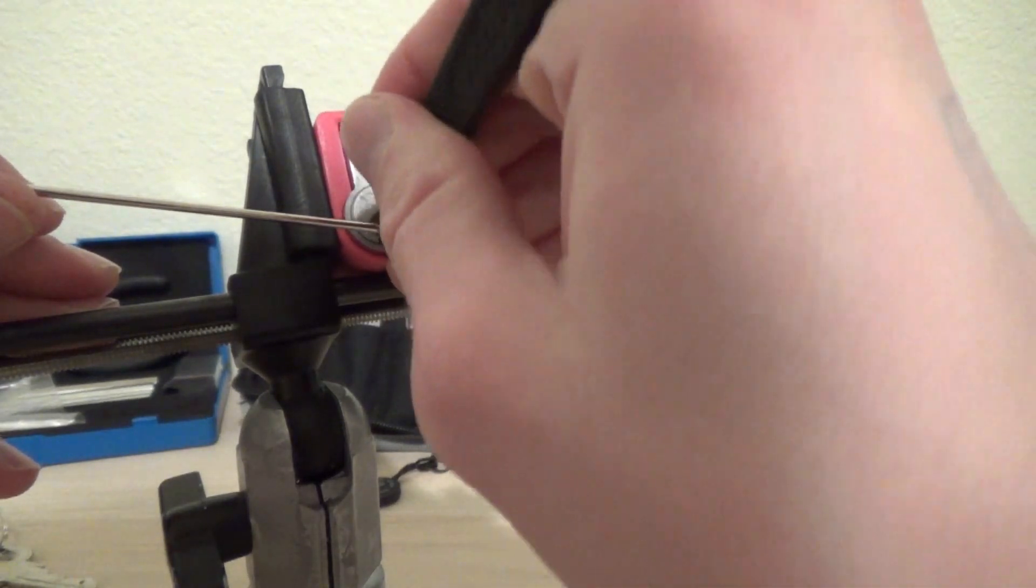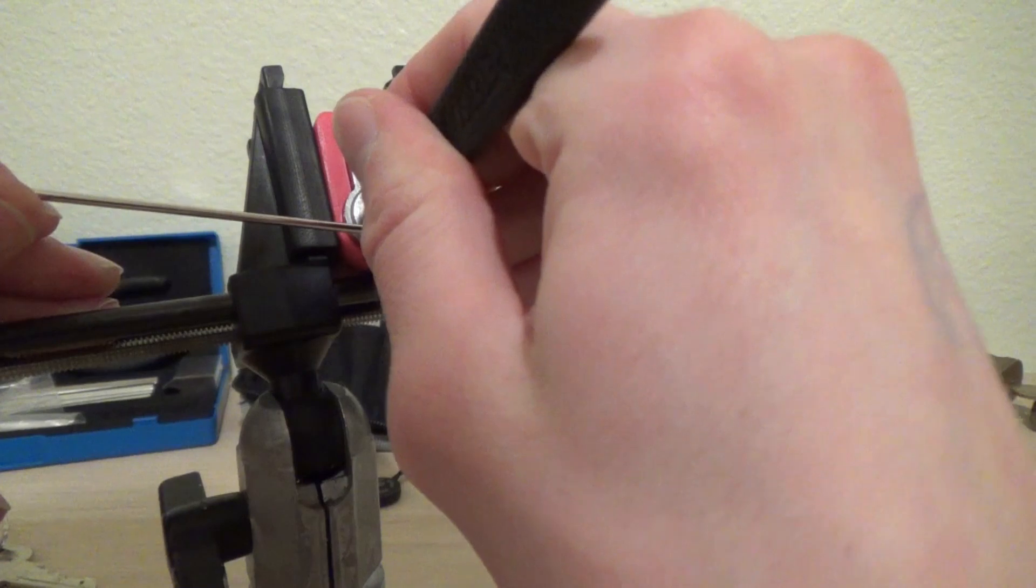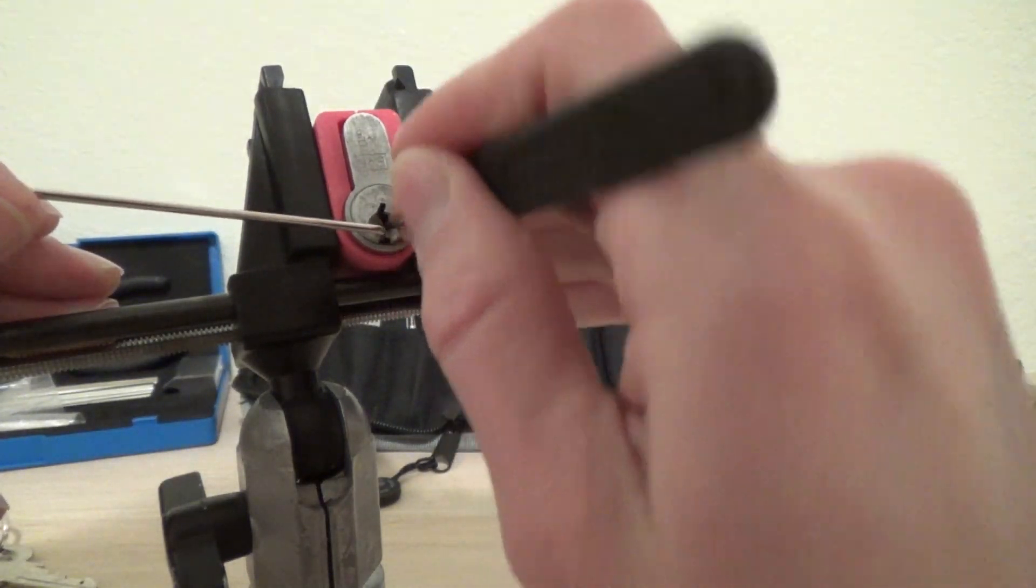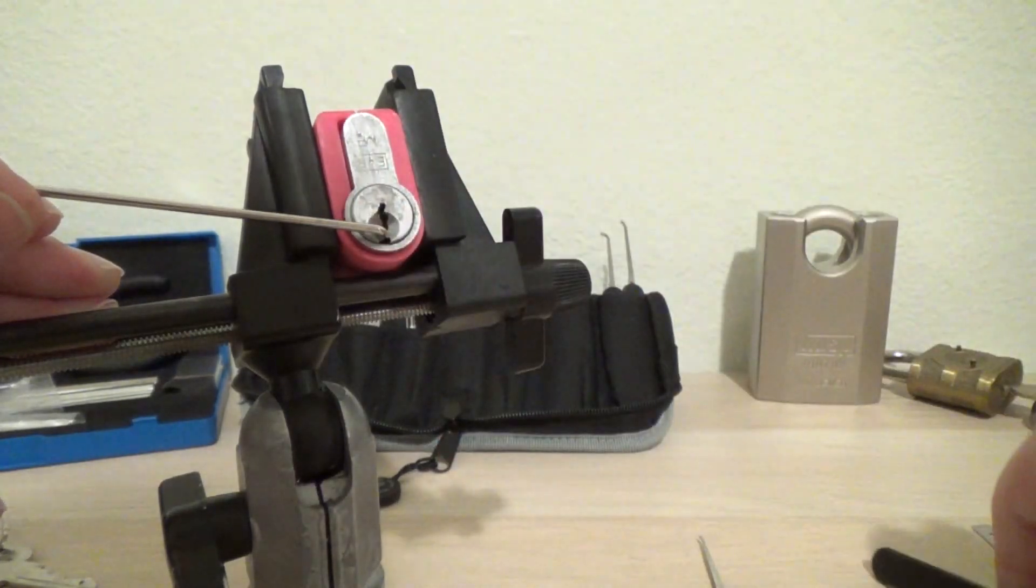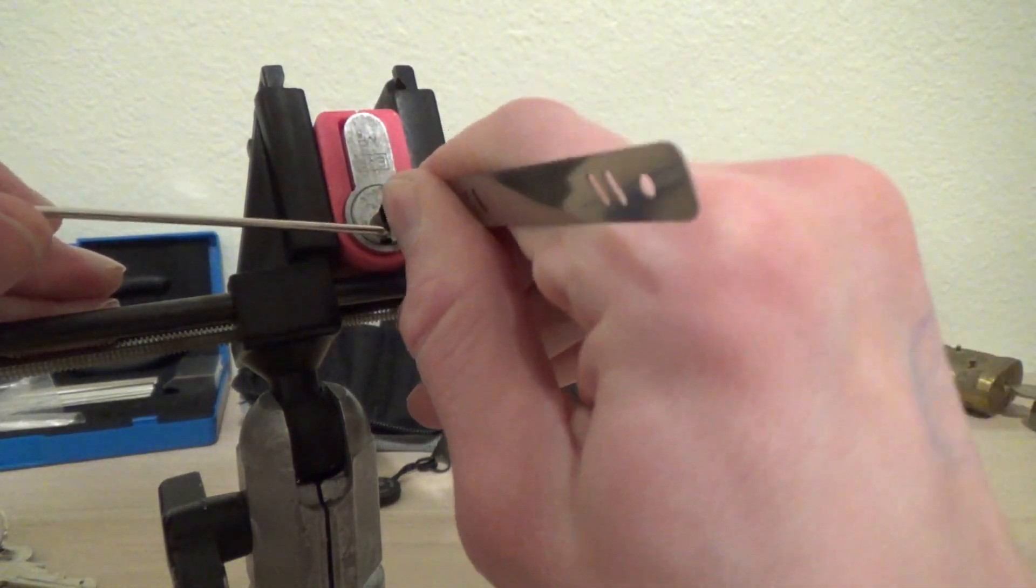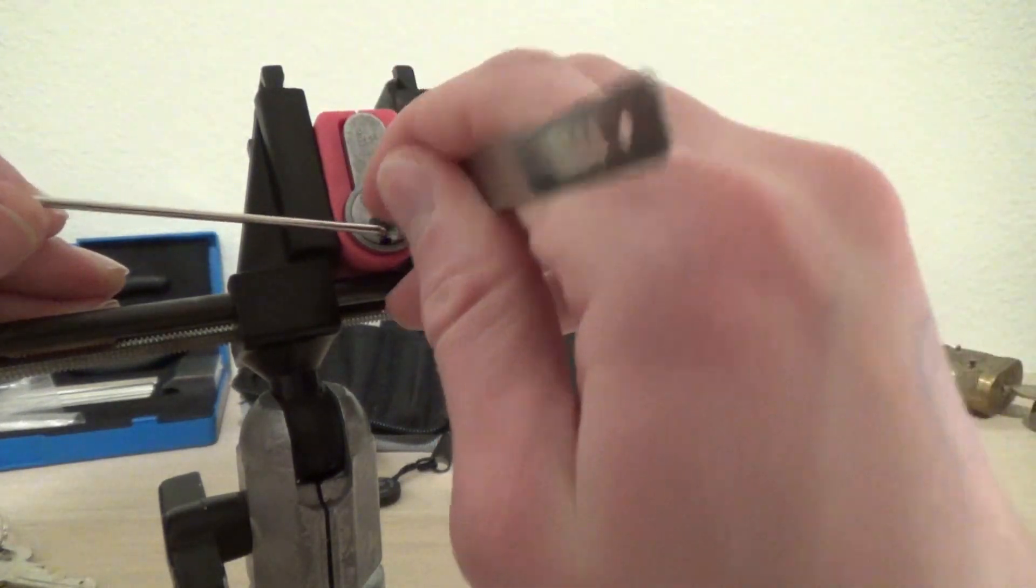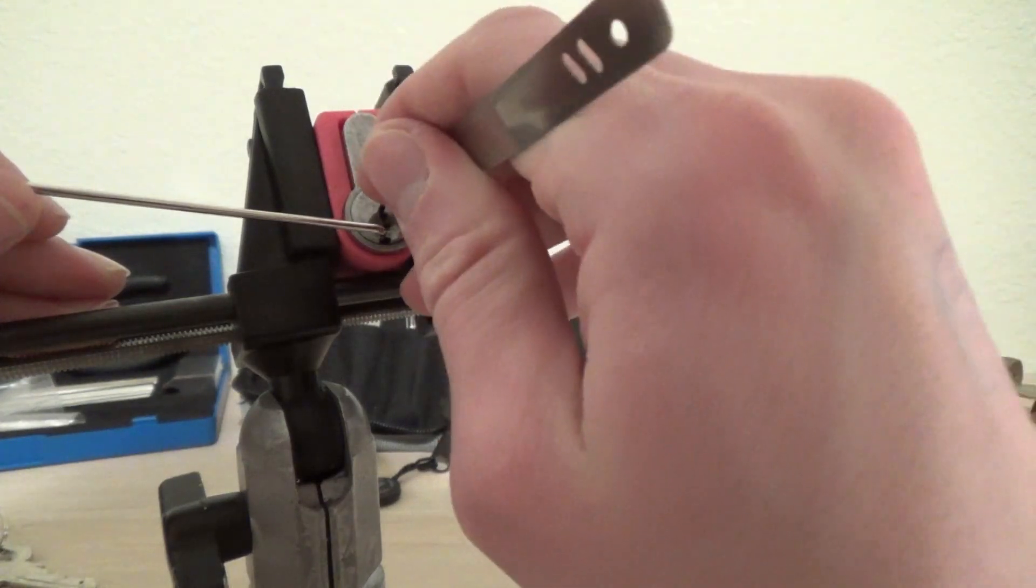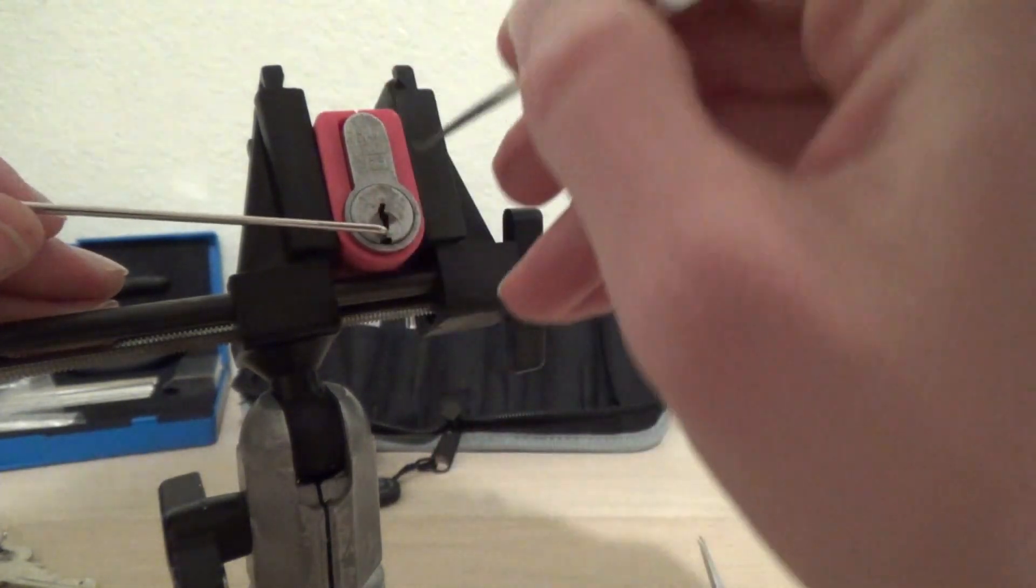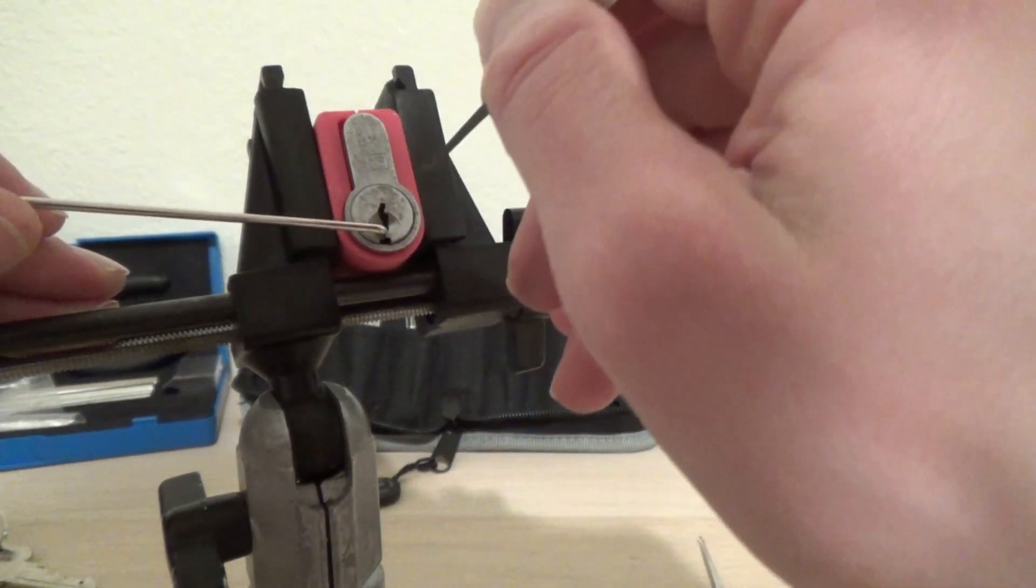One more time. One, two, counter on three. I'm going to move on from three, maybe it's not three. Have I set one high enough? One, two, counter on three. I still have that very slight false set.